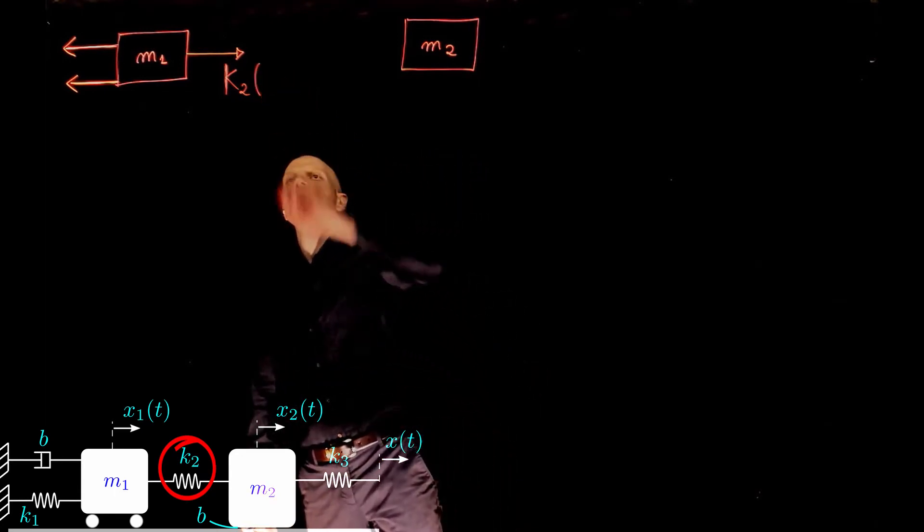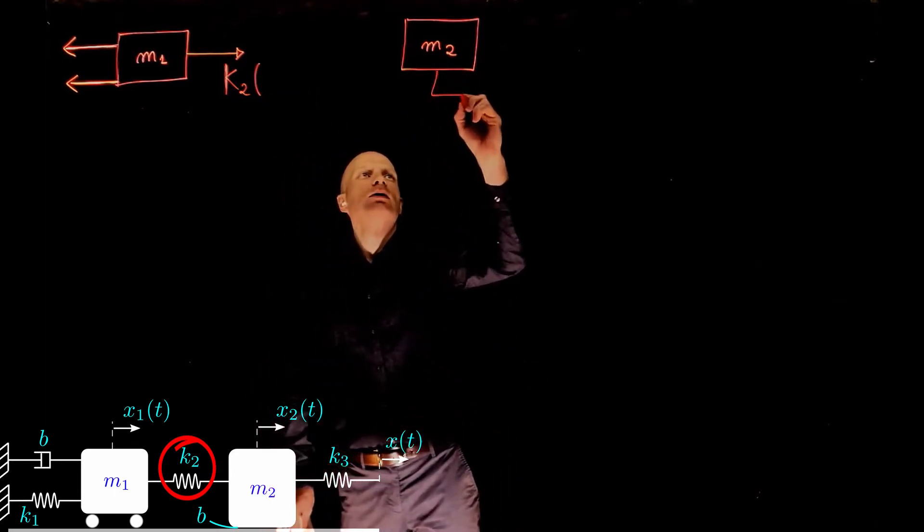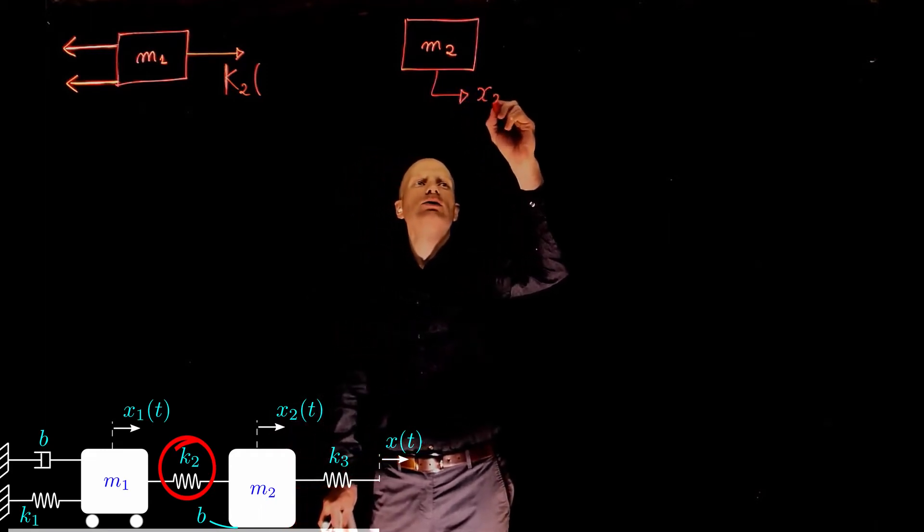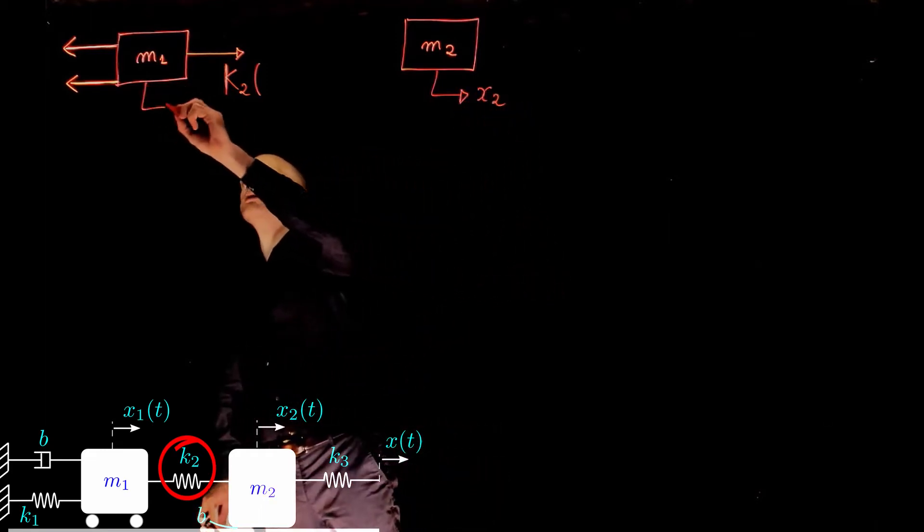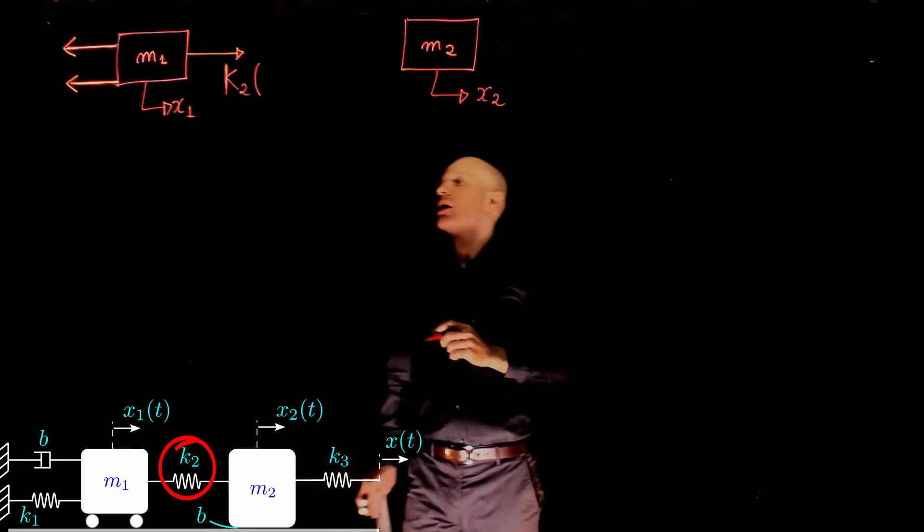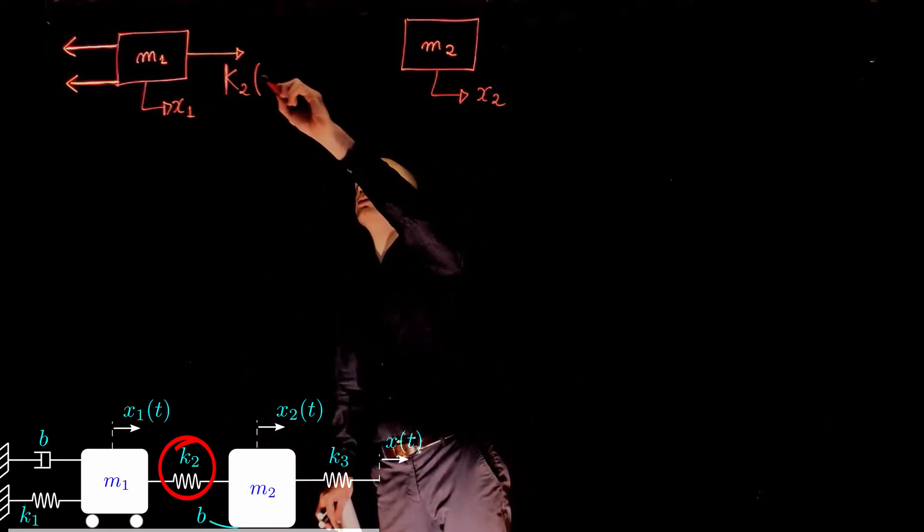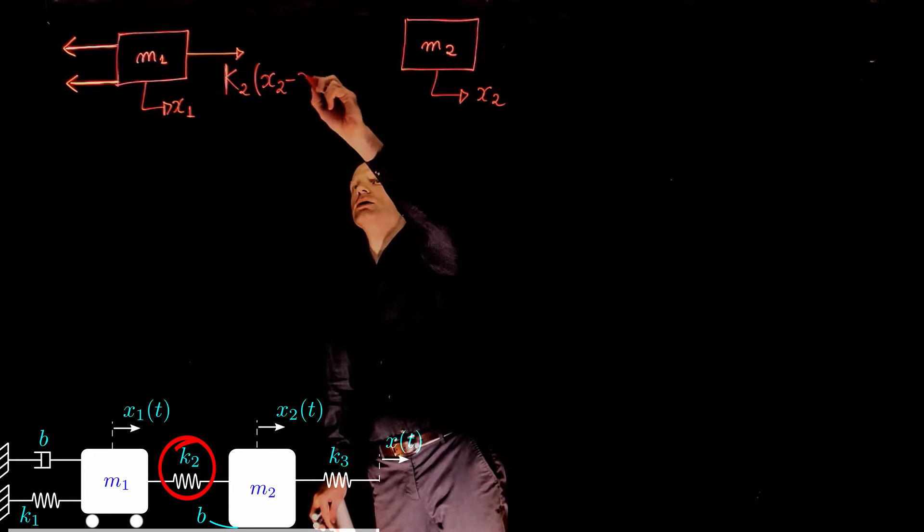times the displacement of mass m2, call that x2, minus the displacement of mass m1, call that x1. So x2 minus x1.